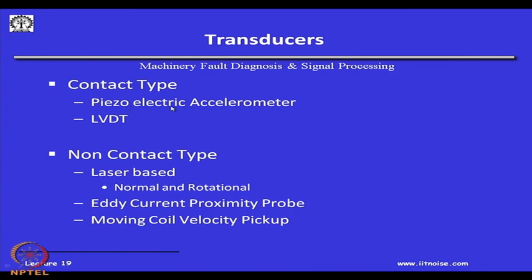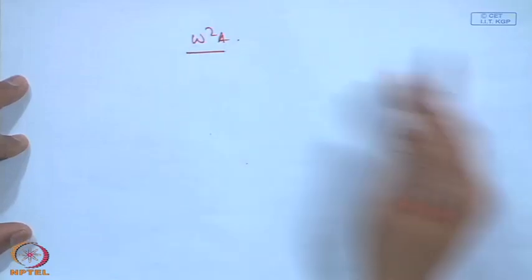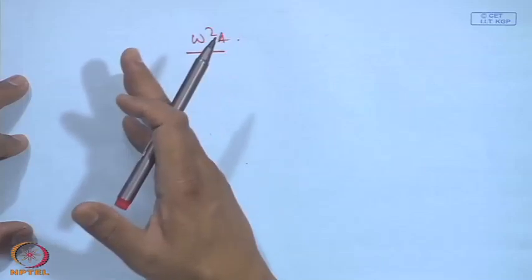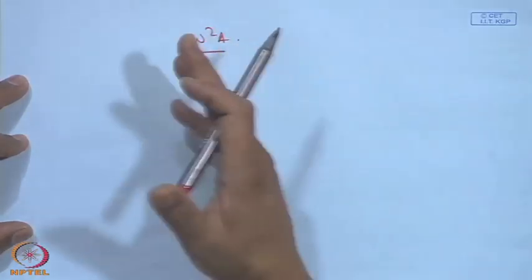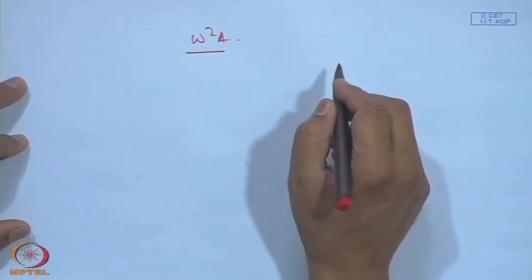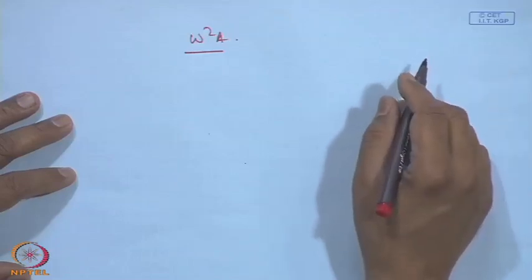One type is the piezoelectric accelerometer. Around 95 to 99 percent of vibration transducers used today are piezoelectric accelerometers because measuring acceleration (omega-squared-a) is very convenient — once you have acceleration, you divide by omega to get velocity and by omega-squared to get displacement. This covers the entire frequency range from near 0 to about 5,000–10,000 Hz, which is not possible with LVDTs or dial indicators. Another type is the LVDT. All these transducers must be in contact with the surface being measured.